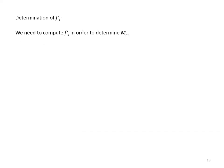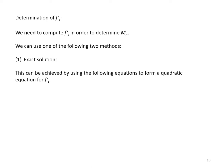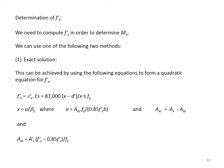Determination of A'_s: we need to compute A'_s in order to determine M_n, and we can use one of two methods. The exact solution is achieved using the following equations to form a quadratic equation for A'_s. The first equation shows A'_s in terms of x. The second equation shows that x is a function of a, and a is a function of A_sc. A_sc in turn is a function of A_ss, because A_sc equals A_s minus A_ss. Finally, A_ss is a function of A'_s, so we can eliminate all unknowns and write one equation in terms of A'_s.